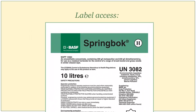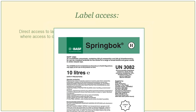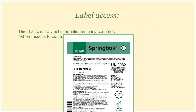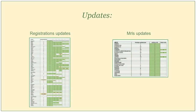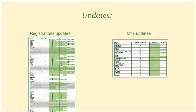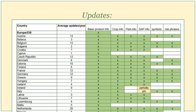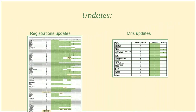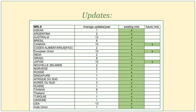Here you can see an example of a BISF label. The HOMOLOGA database gets updated regularly. In this table, we can see the product registration updates for each country. And in this table, we can see the MRL updates for each country.